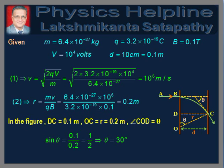In the figure, DC = d = 0.1 meters and OC = r = 0.2 meters. Angle COD = theta. Therefore, sin(theta) = d/r = 1/2, which implies theta = 30 degrees. This is the answer to the first part of the question.